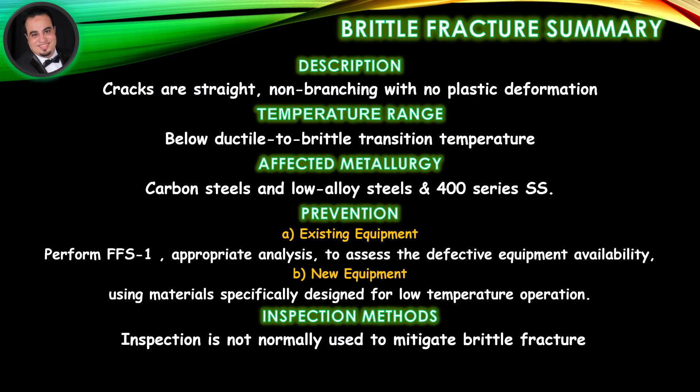Brittle fracture summary — Description: cracks are straight, non-branching, with no plastic deformation. Temperature range: below the ductile-to-brittle transition temperature. Affected metallurgy: carbon steels, low alloy steels, and 400 series stainless steel. Prevention for existing equipment: perform fitness-for-service appropriate analysis to assess defective equipment availability. For new equipment: use materials specifically designed for low temperature operation. Inspection: inspection is not normally used to mitigate brittle fracture.